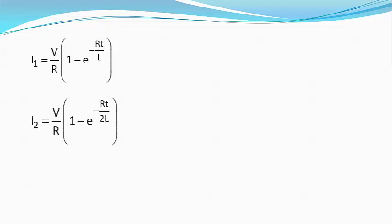Then, according to the making of the circuit through inductor, I1 equals V divided by R, bracket starts, 1 minus e raised to power minus RT divided by L, bracket closed. And I2 equals V divided by R, bracket starts, 1 minus e raised to power minus RT divided by 2L, bracket closed.